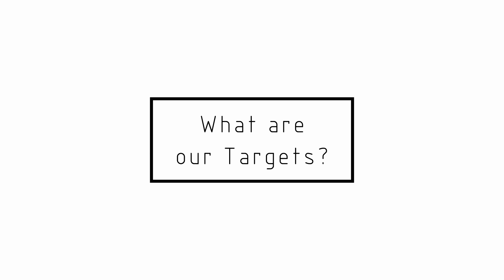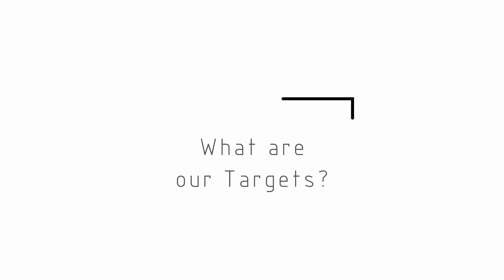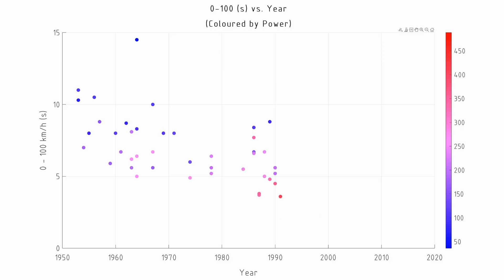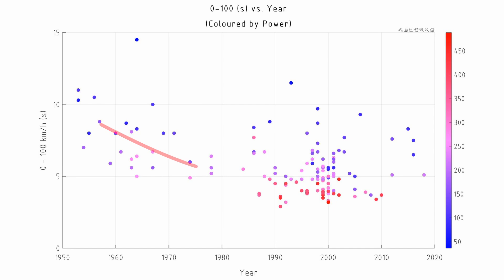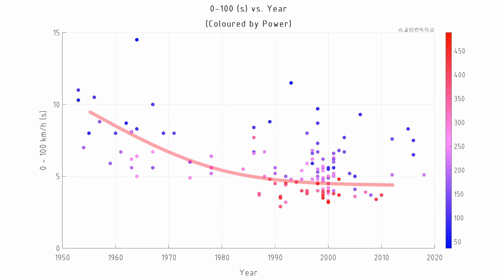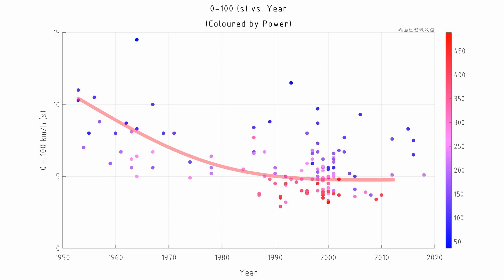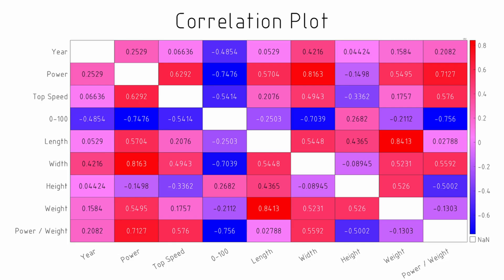Something that is considered quite important for this vehicle will be its acceleration capability. We can see in this graph the acceleration time from 0 to 100 kilometers per hour versus the year, and we see that over time cars are improving — there's an increase in the acceleration capabilities of vehicles versus time. Looking at what's most important in the 0 to 100 time according to the correlation plot, we see that it is power.